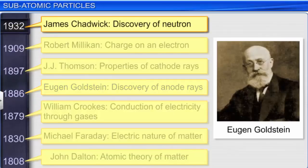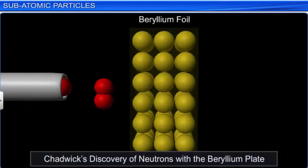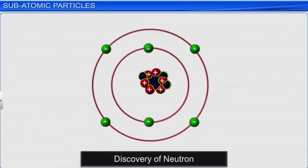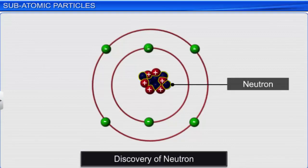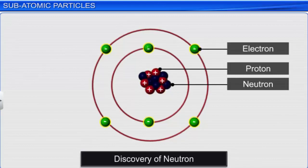Later in 1932, James Chadwick proved the presence of these heavy, neutral particles through a series of scattering experiments. On bombarding a beryllium plate with alpha particles, Chadwick observed the emission of a neutral particle whose mass was equivalent to that of a proton. He named this particle the neutron. It was thus concluded that an atom is made up of protons (positively charged particles), electrons (negatively charged particles), and neutrons (neutral particles).